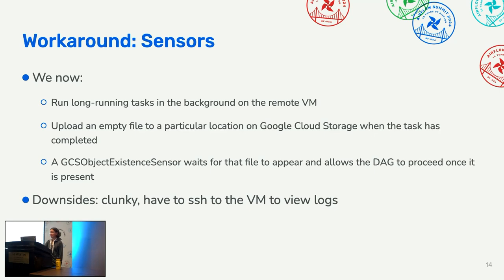The way we've worked around this is by using sensors — it's a little hacky but it works. For tasks that need to run for several days, we run them in the background on a remote VM. When the task completes it uploads an empty file to Cloud Storage, and we use a GCS object existence sensor to wait for that file to appear before the DAG proceeds. There are issues like having to SSH to the VM to view logs, but it works for now.